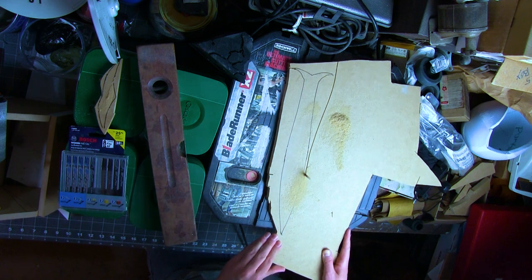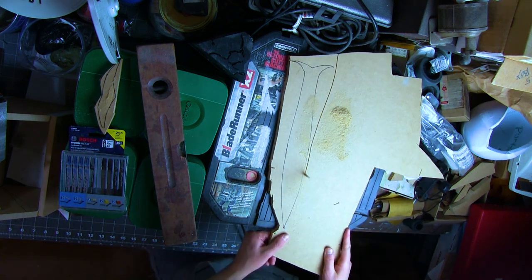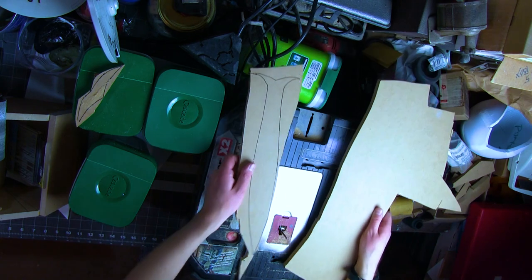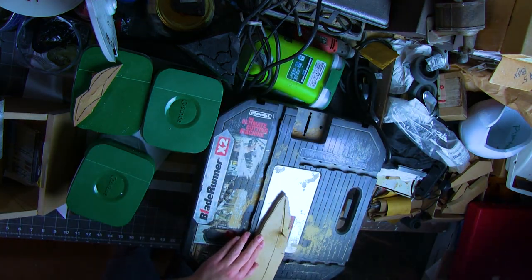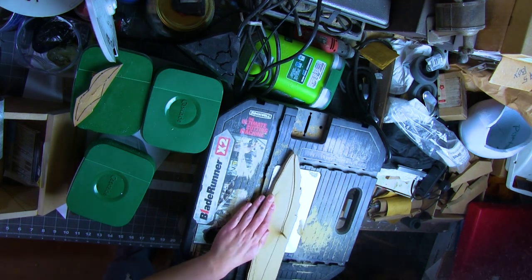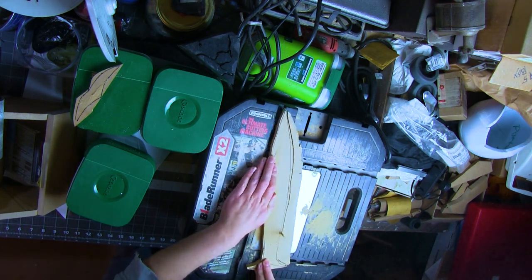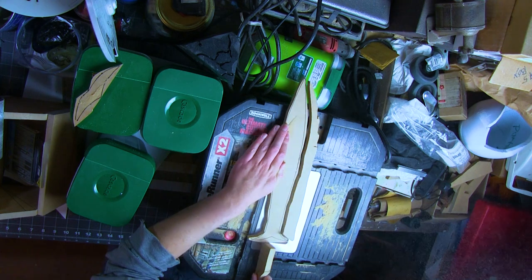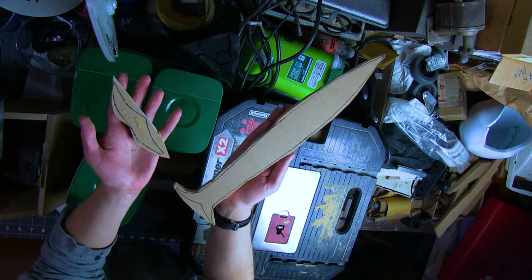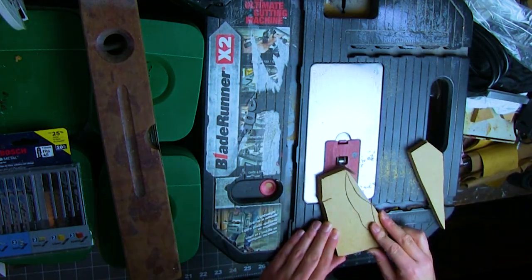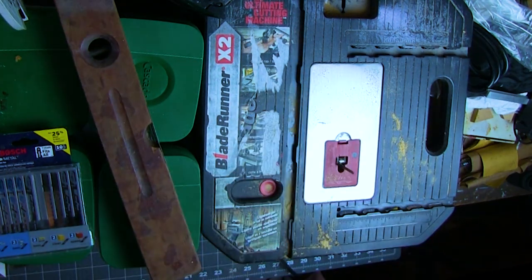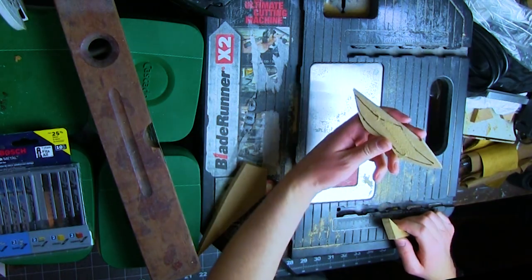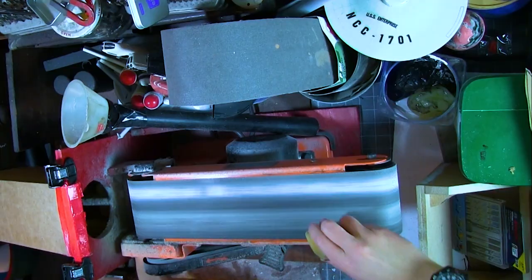I cut out the pieces using this unholy cross between a saber saw and a scroll saw. So the dust kicked up by MDF wood is even worse to breathe than EVA foam dust. So I wear a mask while doing this. I'm cutting a little bit outside the lines because I don't have great control with this saw. And if this piece decides to wander on me, you know, it's always easier to remove material than add it back.